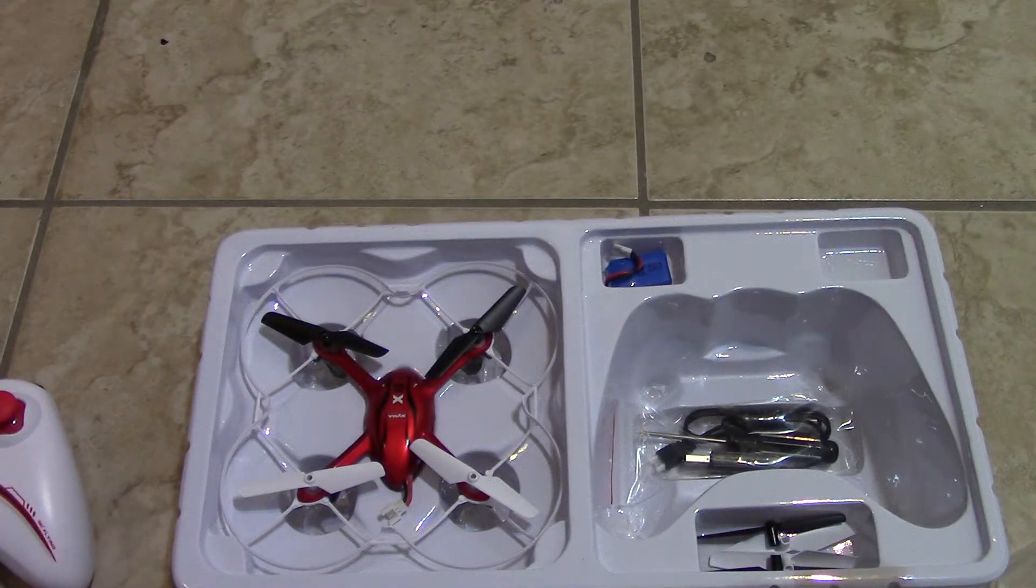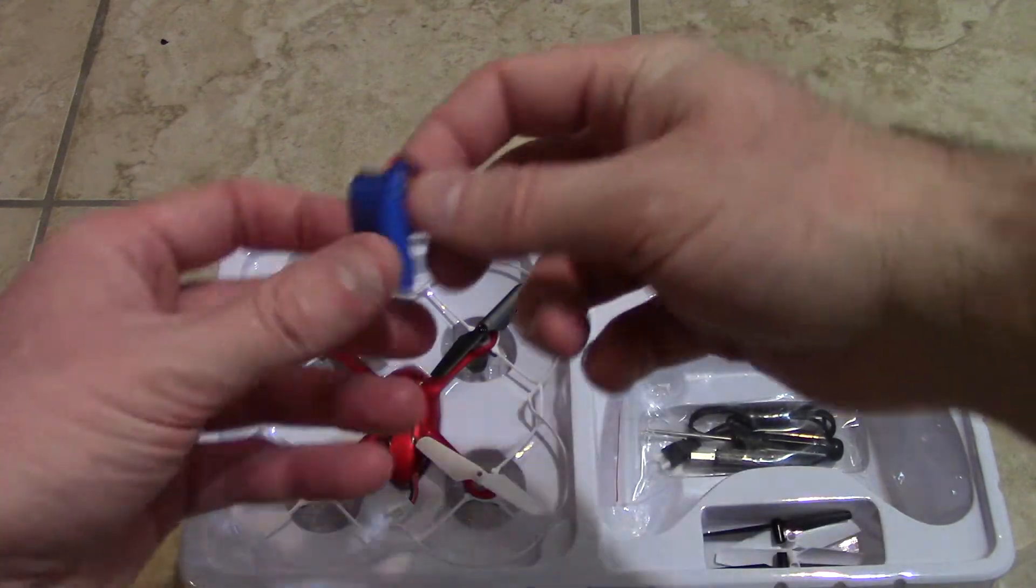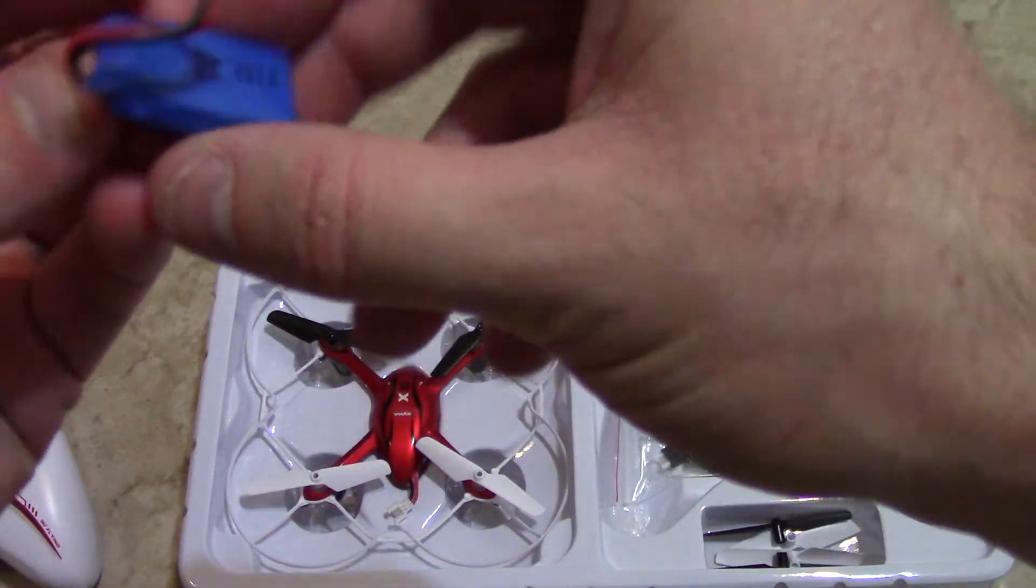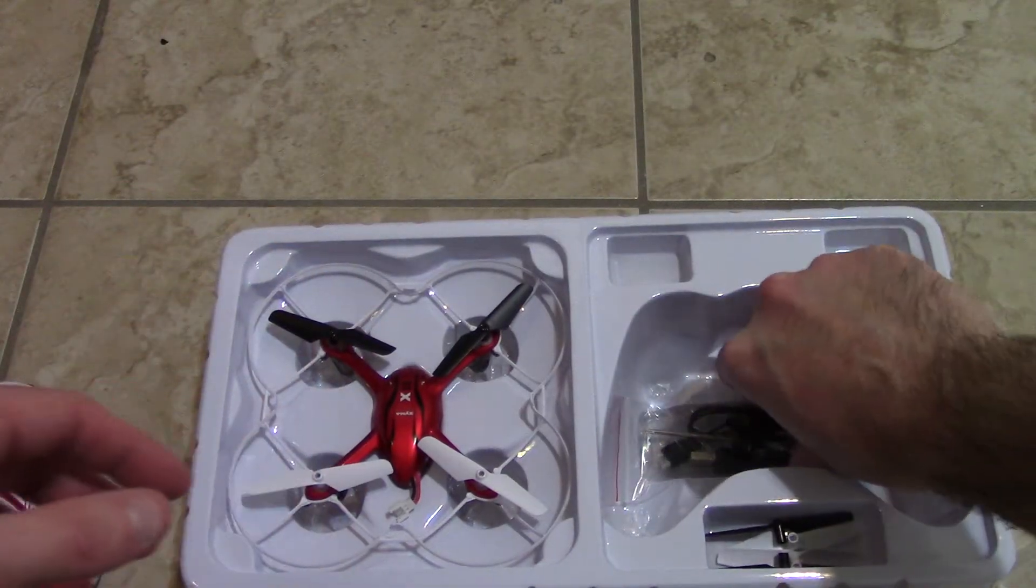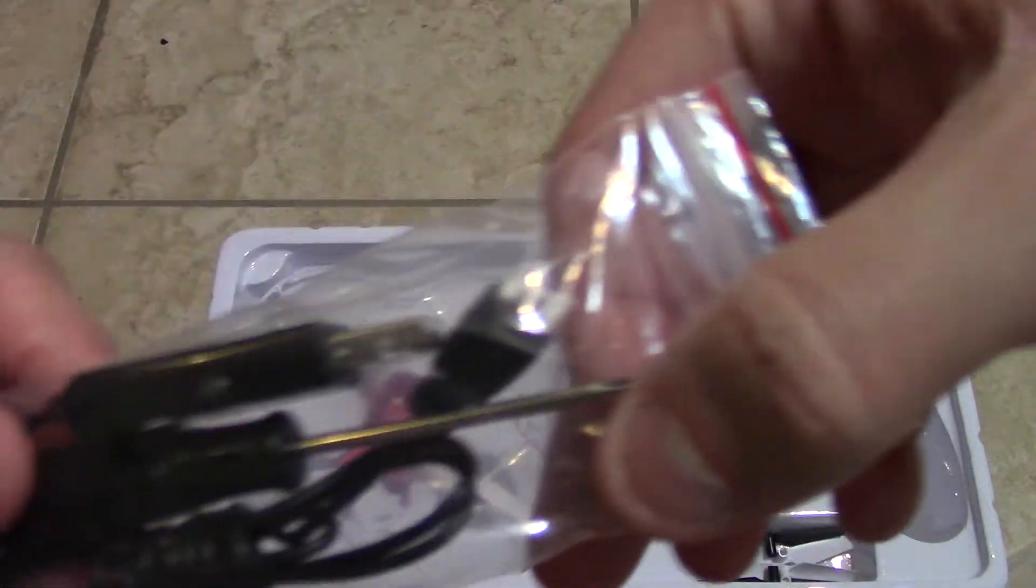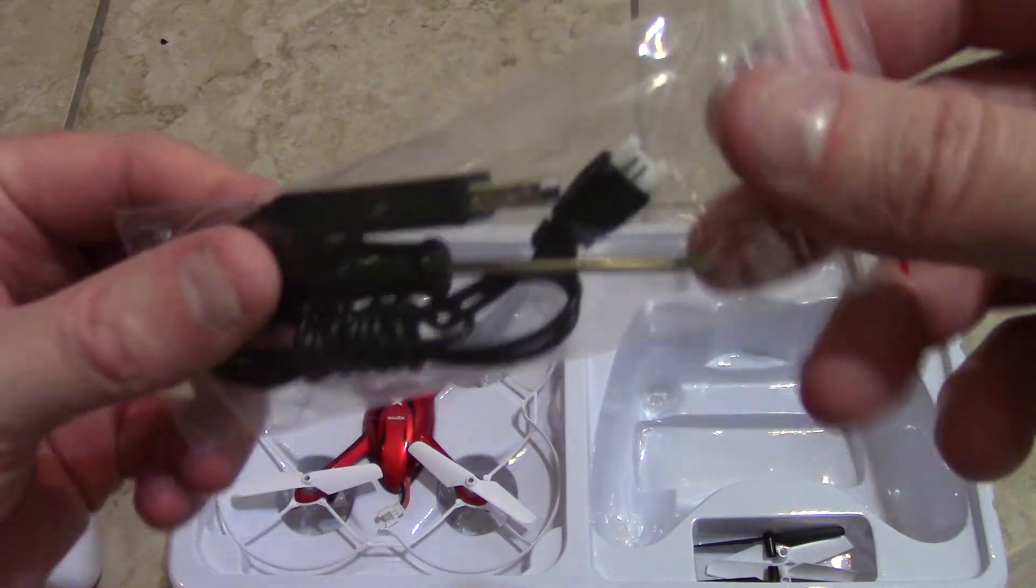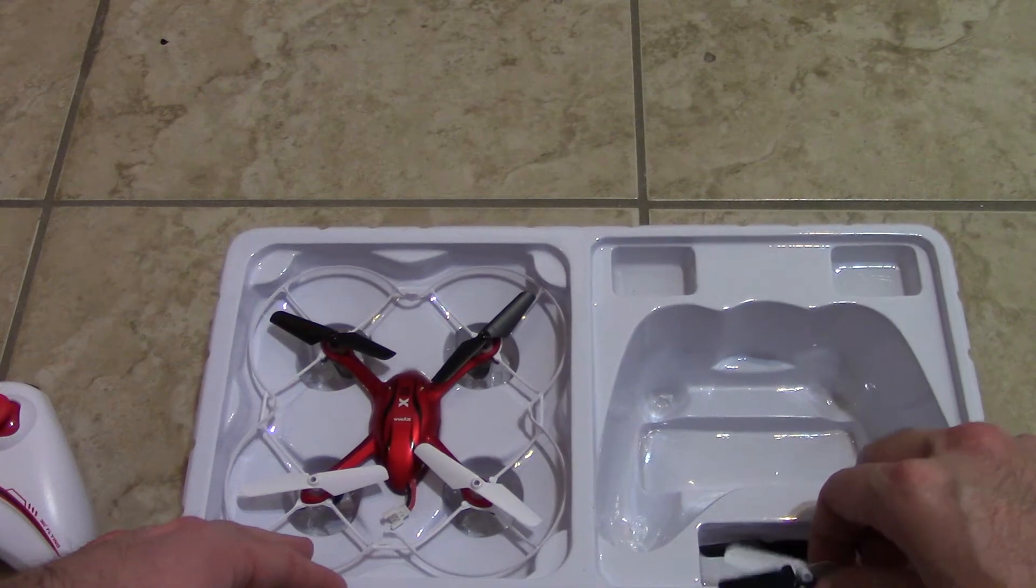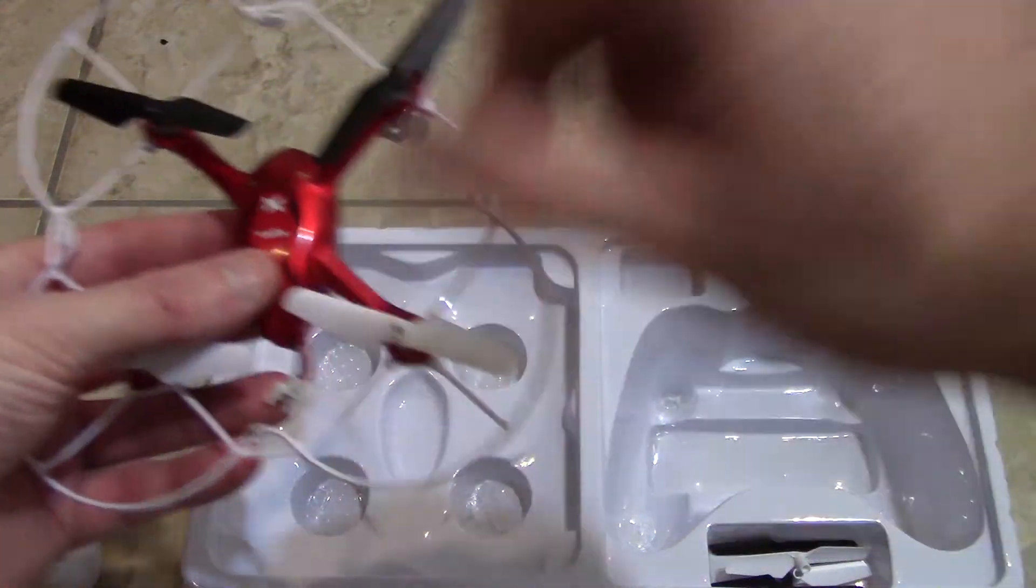All right, so let's see for the quadcopter itself. First I'm gonna take out the battery, small 200mAh battery which I got plenty of batteries so that's gonna be pretty much useless. Charger, screwdriver. So it's always fun to have another charger for that. My WL toys would charge two at a time. Small screwdriver, that's practical.